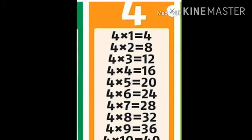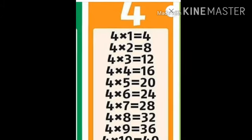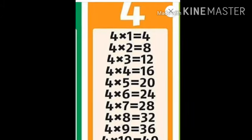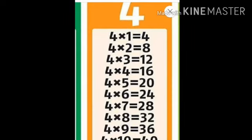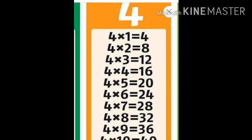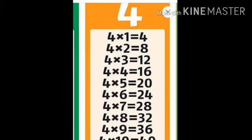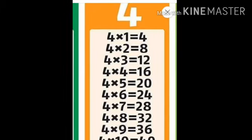Now let's start the table of 4: 4 ones are 4, 4 twos are 8, 4 threes are 12, 4 fours are 16, 4 fives are 20, 4 sixes are 24, 4 sevens are 28, 4 eights are 32, 4 nines are 36, 4 tens are 40.